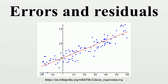The expected value, being the mean of the entire population, is typically unobservable, and hence the statistical error cannot be observed either. A residual, on the other hand, is an observable estimate of the unobservable statistical error. Consider the previous example with men's heights and suppose we have a random sample of n people. The sample mean could serve as a good estimator of the population mean. The difference between the height of each man in the sample and the unobservable population mean is a statistical error, whereas the difference between the height of each man in the sample and the observable sample mean is a residual. Note that the sum of the residuals within a random sample is necessarily zero, and thus the residuals are necessarily not independent. The statistical errors, on the other hand, are independent, and their sum within the random sample is almost surely not zero.